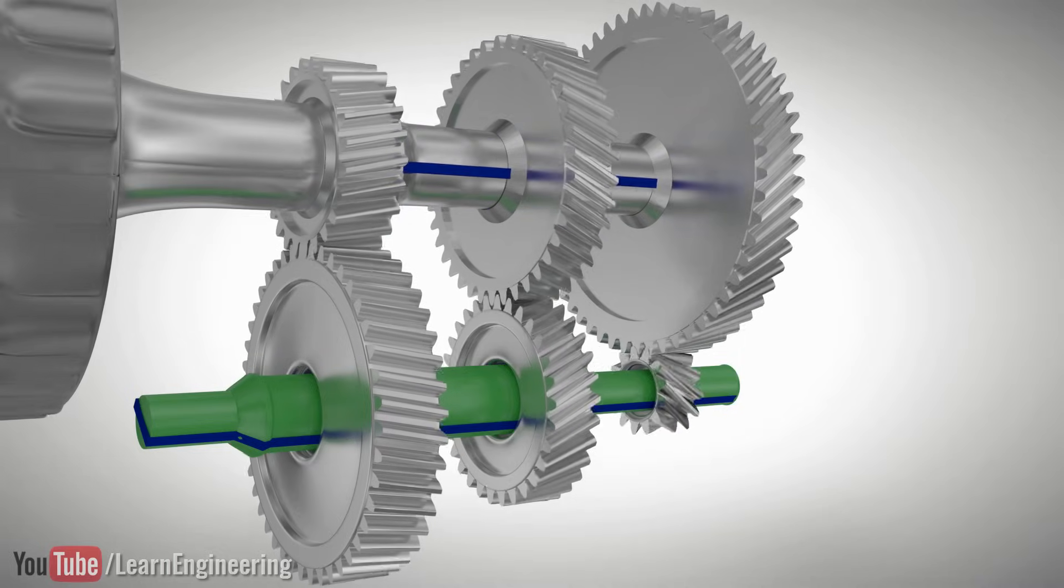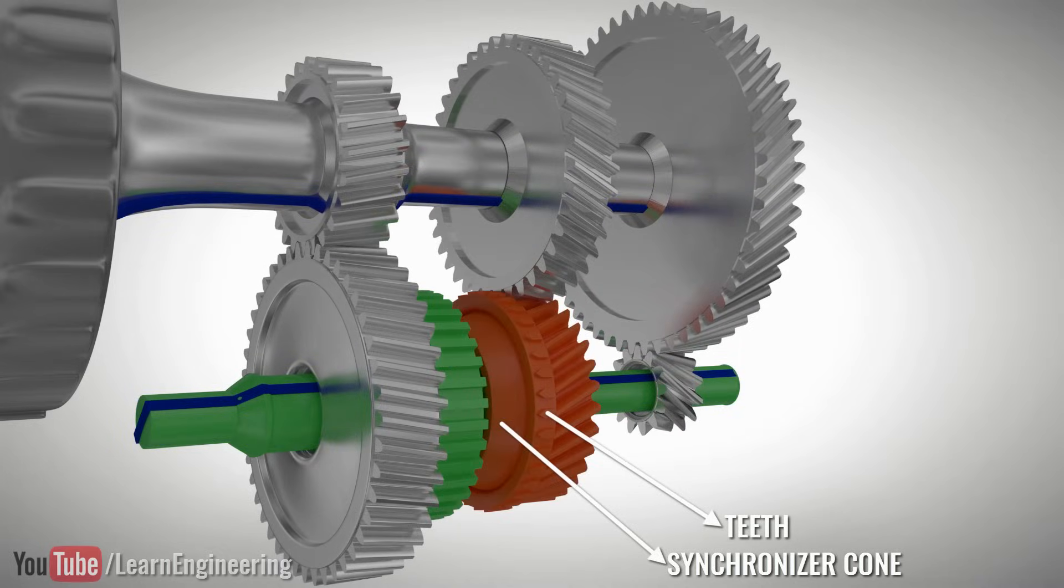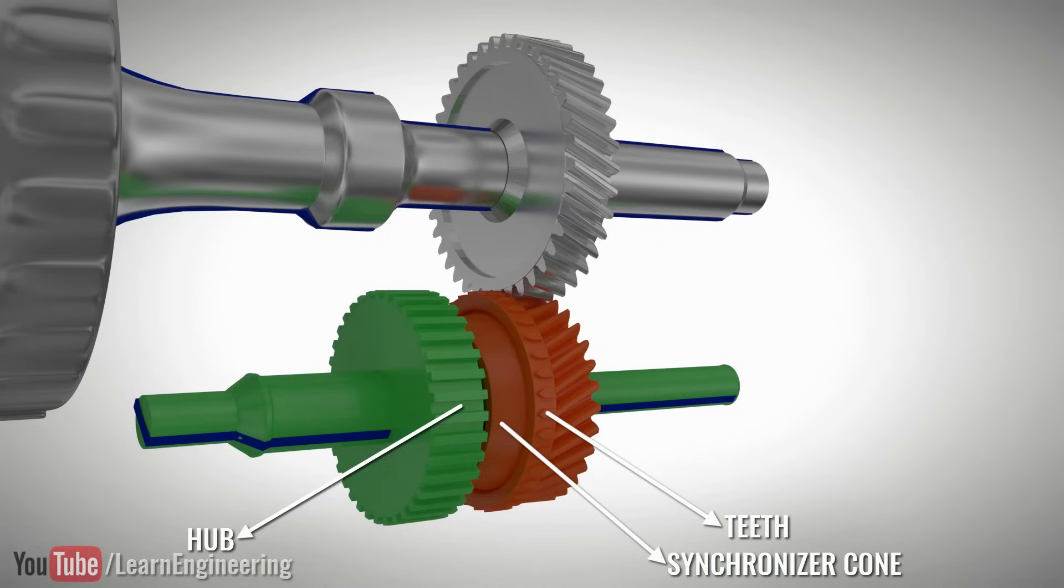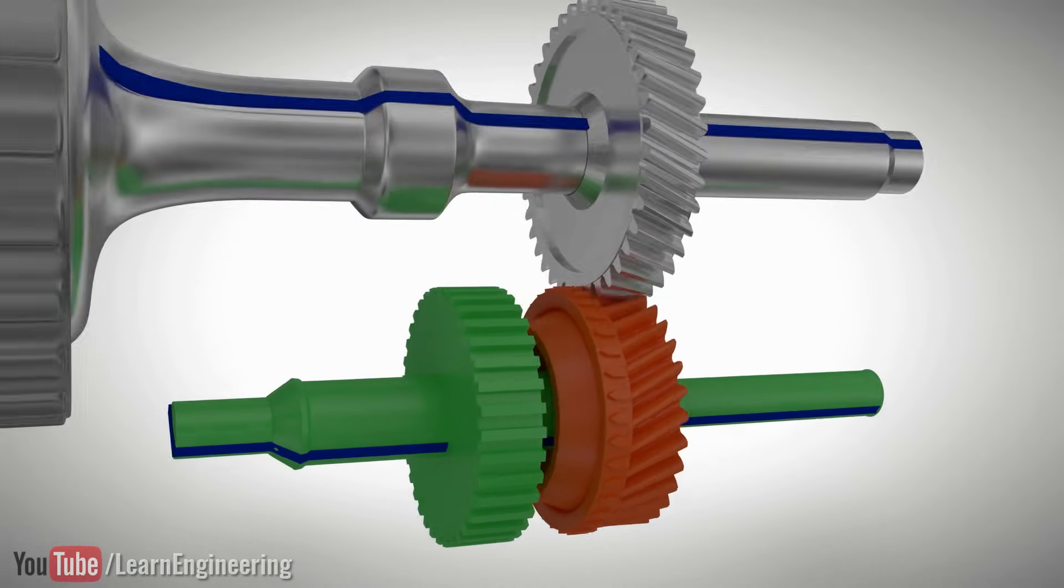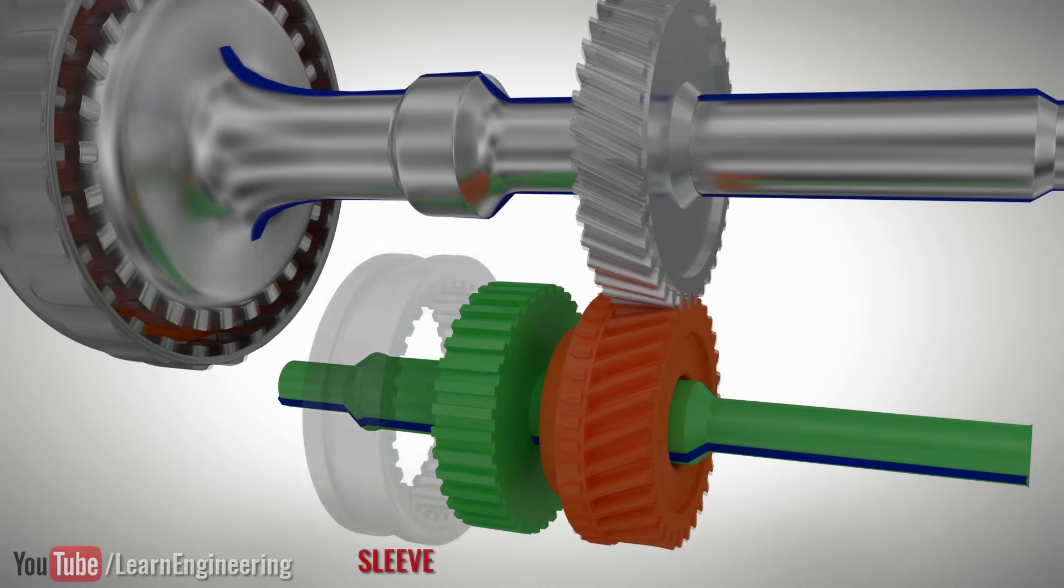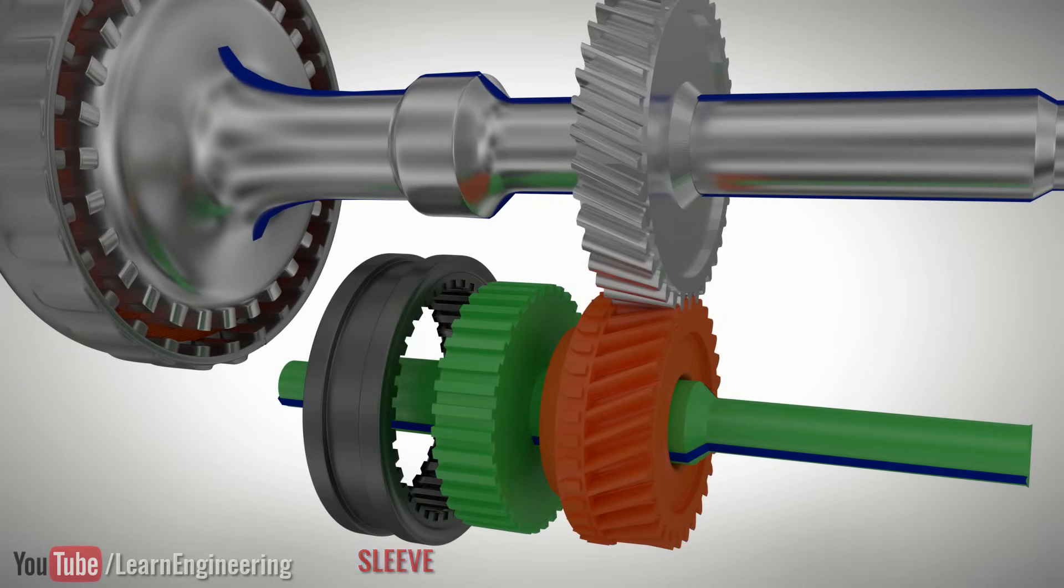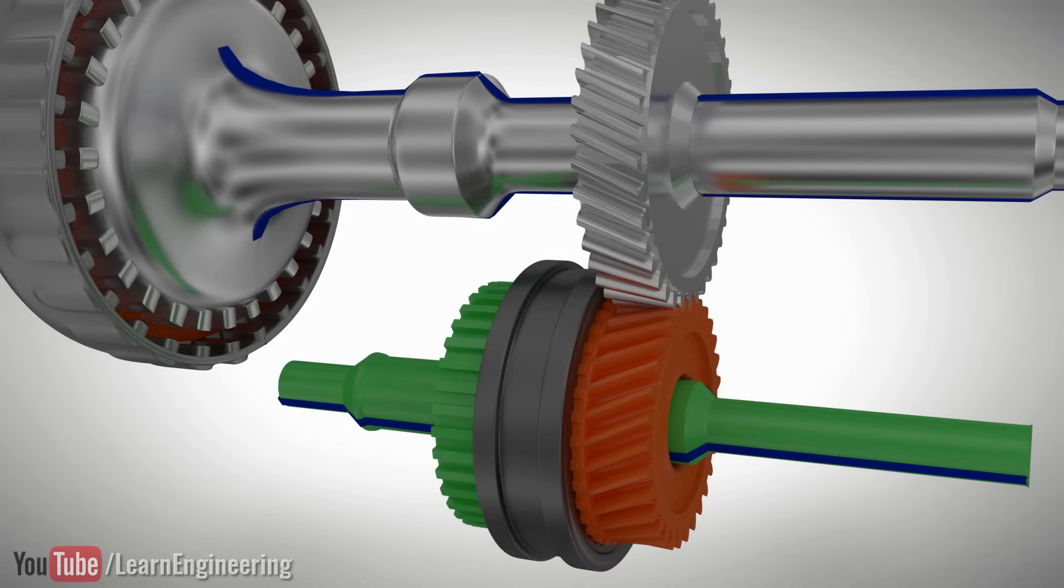To facilitate this connection, each gear is fitted with a synchronizer cone and teeth and the shaft is fitted with a hub. If the sleeve gets connected to the synchronizer teeth, the corresponding gear will be connected to the shaft.